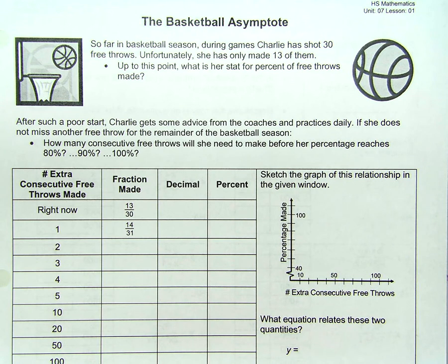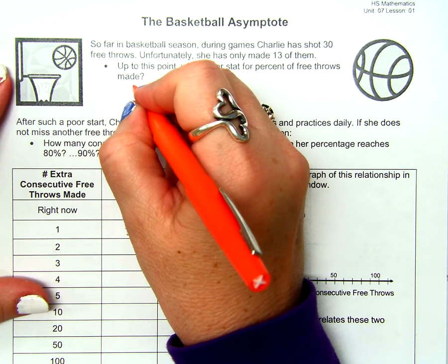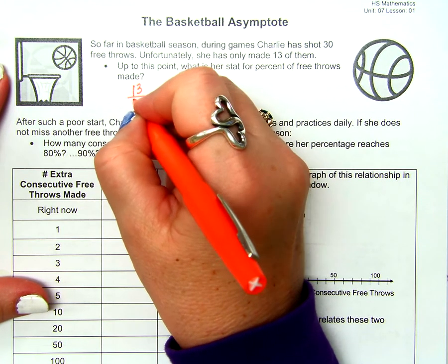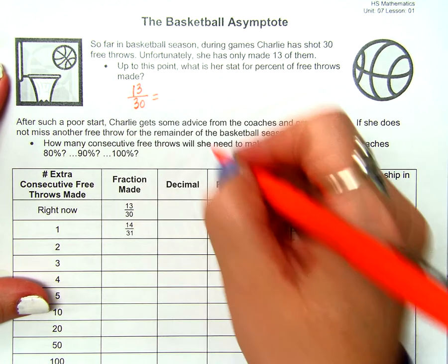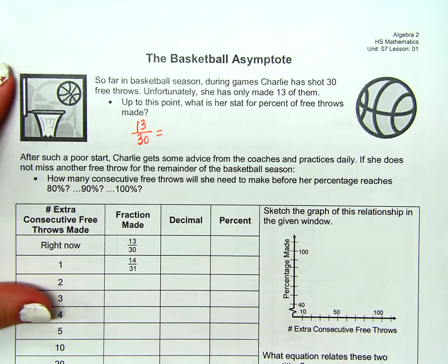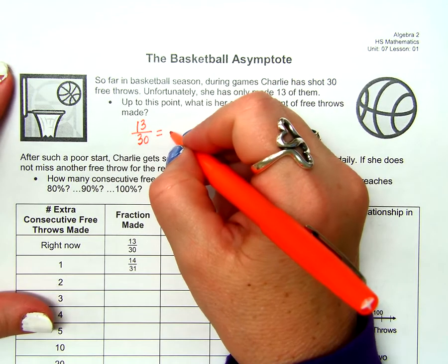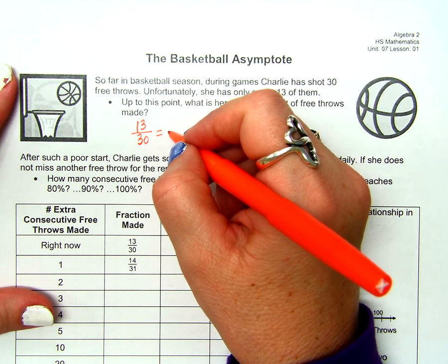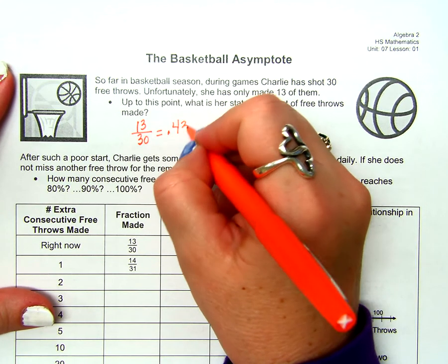Nobody in here plays basketball, so you don't know how to do stats? How do you do it? How many she made by how many shots she took? And that is — give me to the thousandth, please. 0.433.